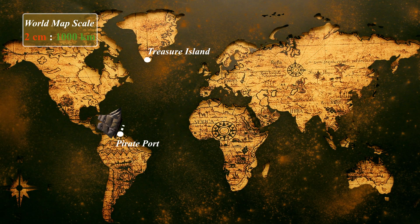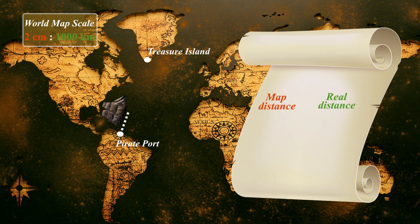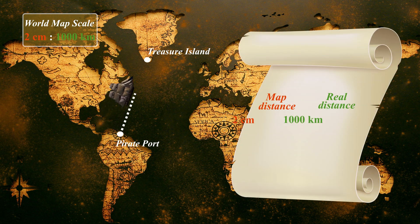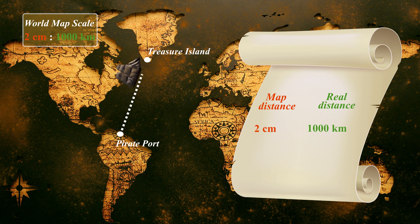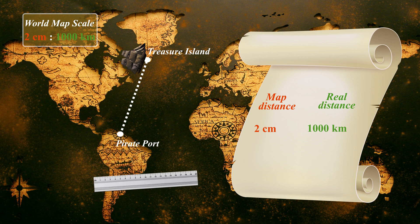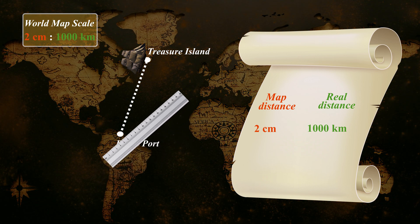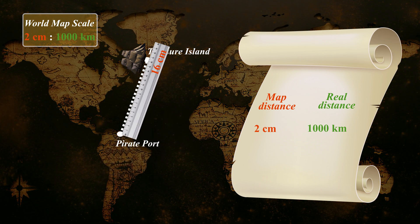Here we are comparing the map distance with the real distance. The scale on the map says that a map distance of two centimeters is equal to a real distance of 1,000 kilometers. The map distance from pirate port to treasure island is 16 centimeters. So what is the real distance?